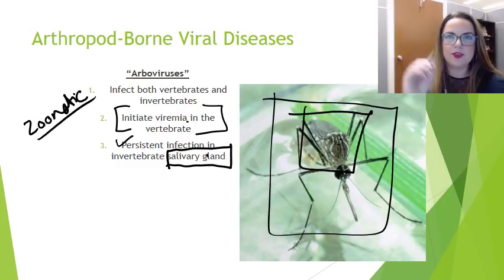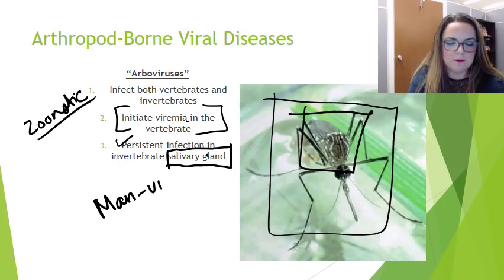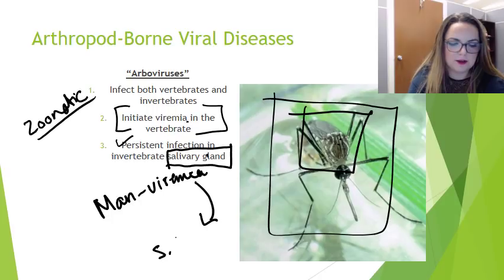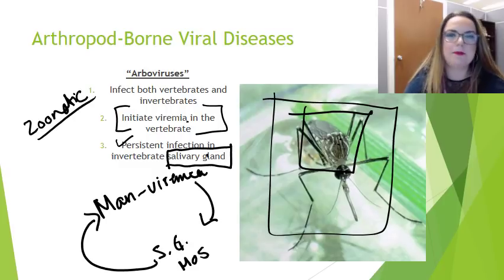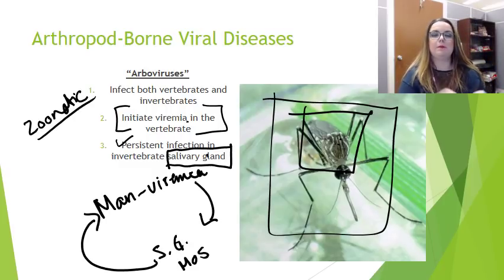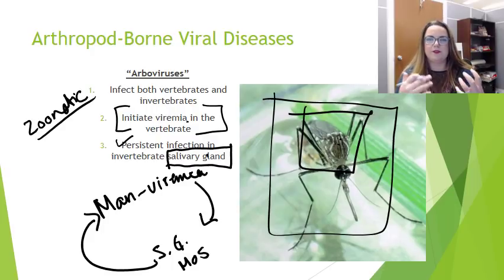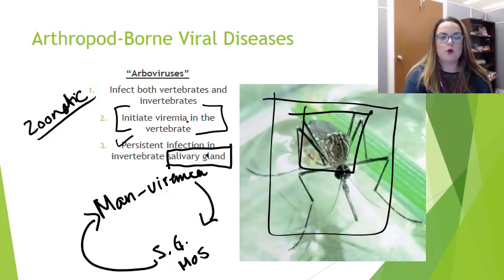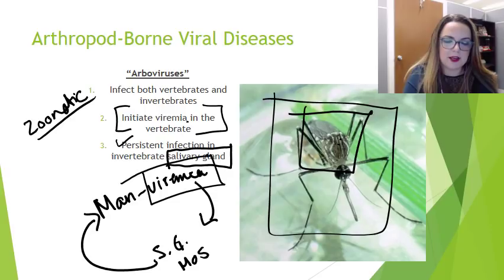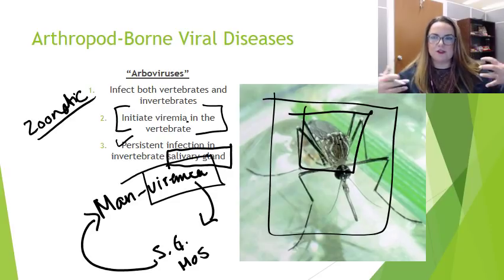You can see right there that that's part of a life cycle. Man needs viremia to spread to the salivary gland of a mosquito so that it can be spread back to man. There are very specific terms for how life cycles work and whether or not we're actually part of it or become a dead-end host, and that is all based on there being sufficient viremia in us to infect the vector.